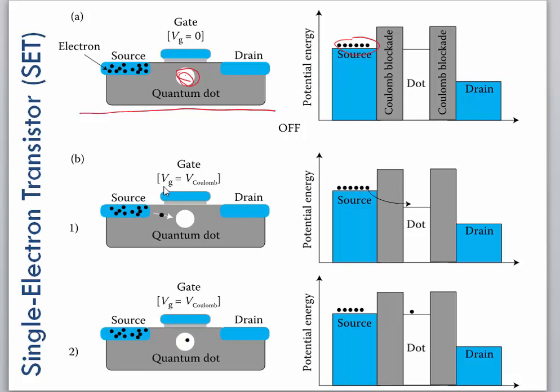Well, if we apply some voltage to the gate, we'll call this V_Coulomb, and it turns out that this voltage has to be enough to get us over the Coulomb blockade.